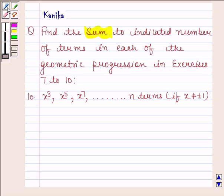find the sum to indicated number of terms in each of the geometric progression in exercises 7 to 10. 10th part is x to the power 3, x to the power 5, x to the power 7, and so on to n terms if x is not equal to plus minus 1. Let us now begin with the solution.